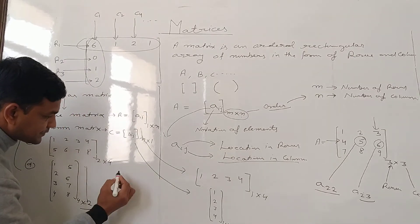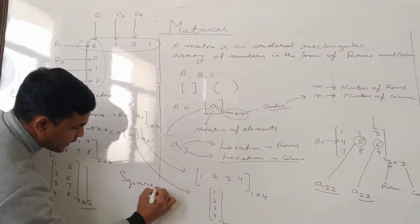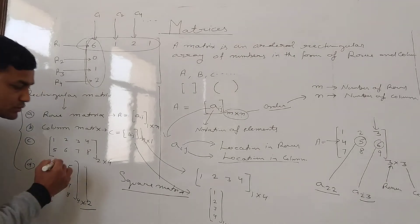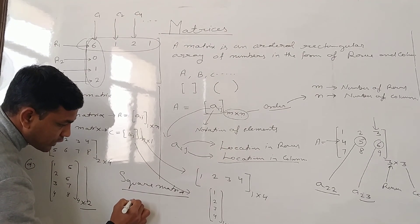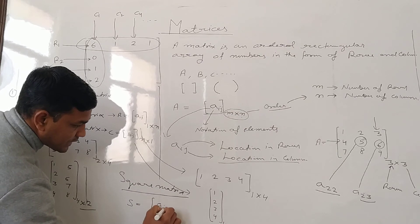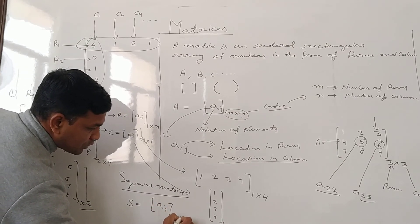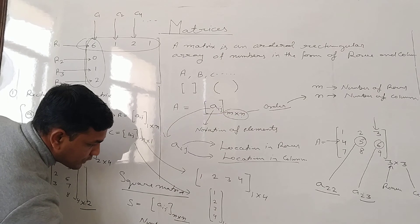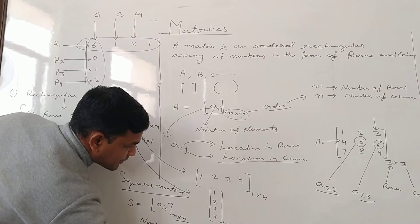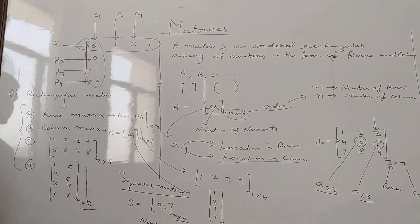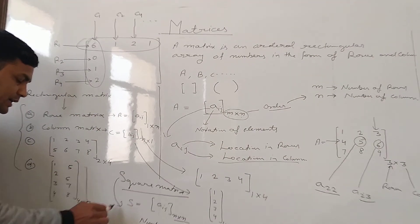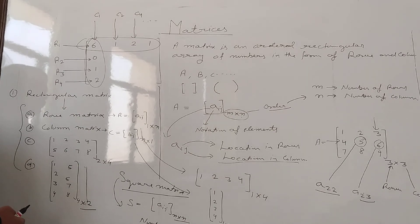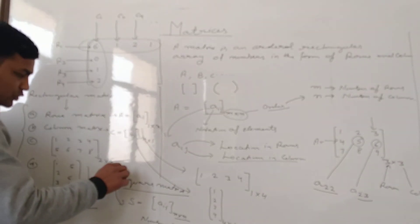Next is the square matrix. In the square matrix, the basic concept is that the number of rows equals the number of columns. This is the first structure and we will continue in the second lecture from the square matrix. Thank you.